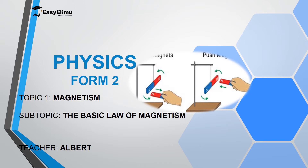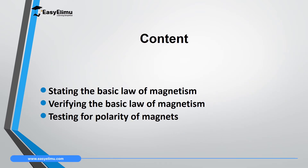In this lesson, we are going to discuss the fifth property of magnets that we call the basic law of magnetism. We will realize that when you have two similar poles — like north pole and north pole — close to each other, they will repel, and when you have two opposite poles — north pole and south pole — they will attract. By the end of this lesson, I expect you to be able to state the basic law of magnetism, verify it experimentally, and describe how to test the polarity of magnets using the poles.